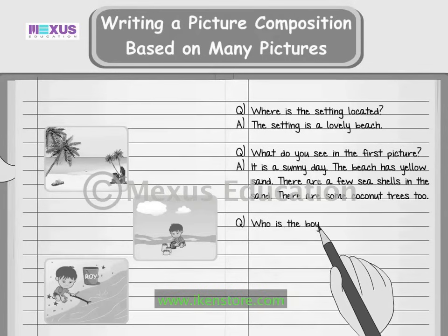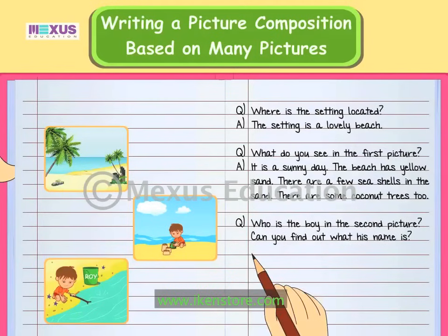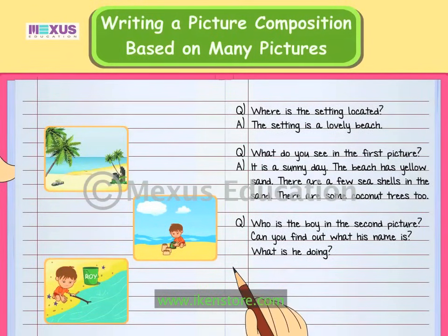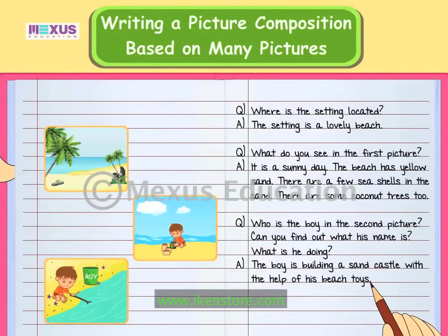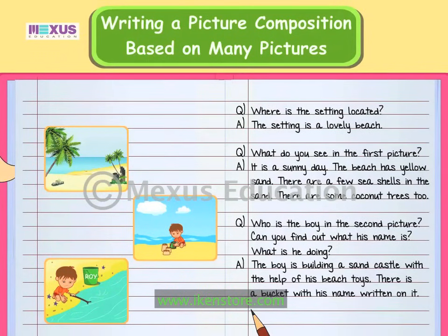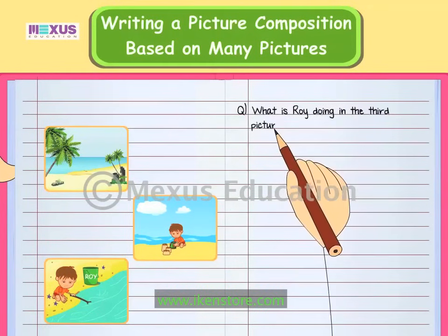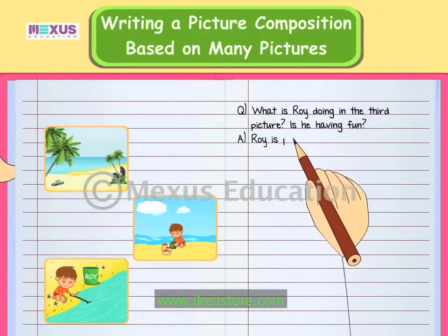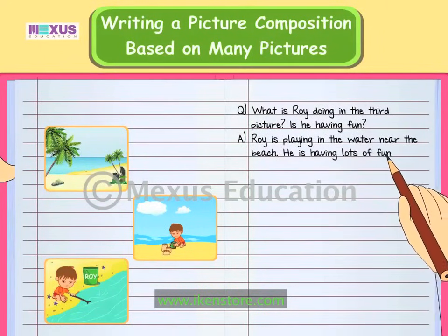Who is the boy in the second picture? Can you find out what his name is? What is he doing? The boy is building a sand castle with the help of his beach toys. There is a bucket with his name written on it — the boy's name is Roy. What is Roy doing in the third picture? Is he having fun? Roy is playing in the water near the beach. He is having lots of fun.